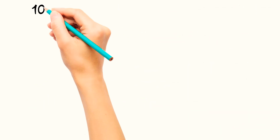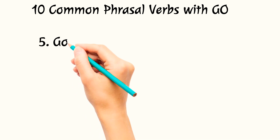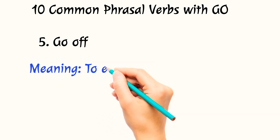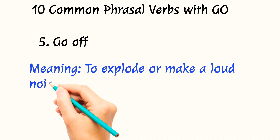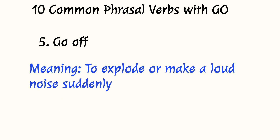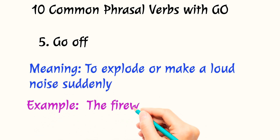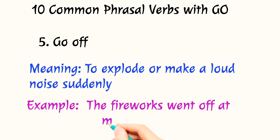The fifth phrasal verb is 'go off.' It means to explode or make a loud noise suddenly. For example: the fireworks went off at midnight.